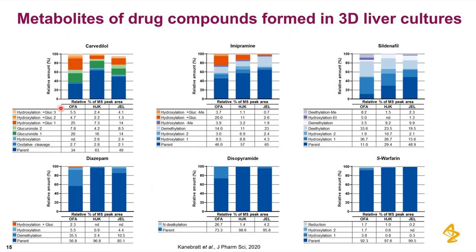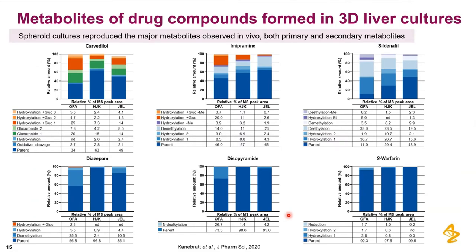You can also see different levels of parent remaining and of the different metabolites — this is a reflection of the different donors and the inter-individual variability. Being able to capture this in vivo feature also in vitro is a good thing. For the more low clint compounds, we don't see that many metabolites, which is also reflected in the amount of parent remaining, and that fits well with the clint values.